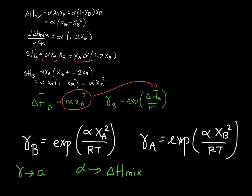If alpha is positive, delta H mixing is greater than zero, the exponent term is positive, and gamma is greater than one. In contrast, if alpha is negative, delta H mixing is negative, the exponent term is negative, and gamma is less than one. This is how we connect the idea of activity and enthalpy of mixing, and in class we will take a closer look at some examples of this.